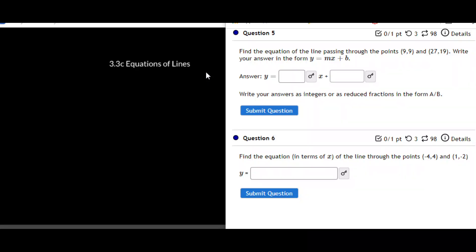So for the next group of questions, we are going to be working on finding an equation of a line when we're just given two points. So if we look at question five, we are told that the line goes through 9, 9 and also through 27, 19.